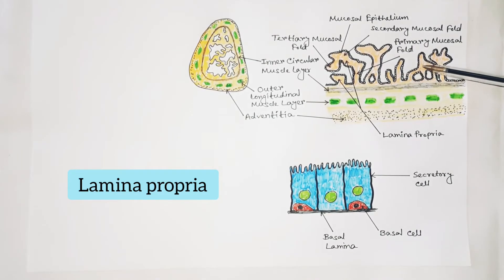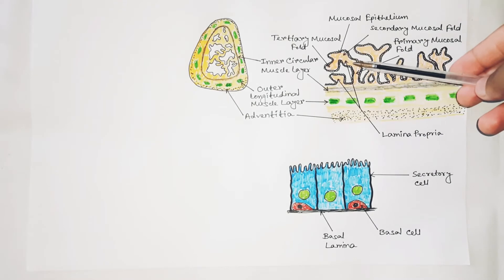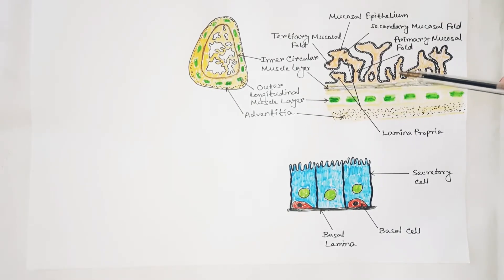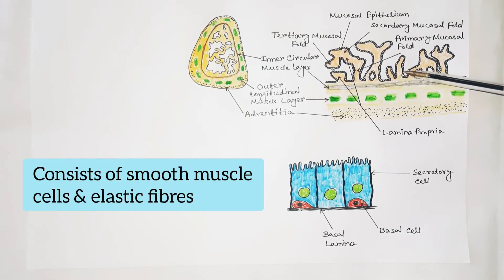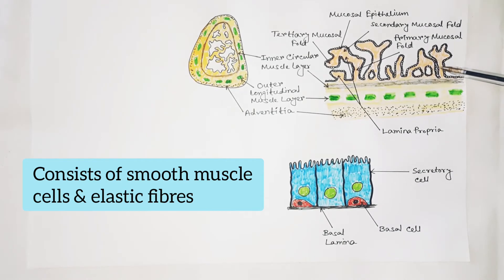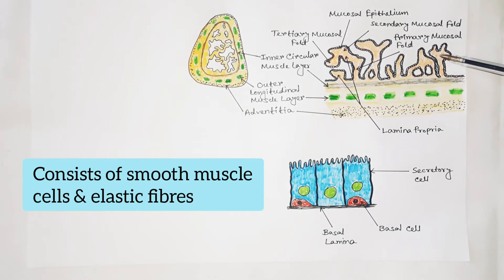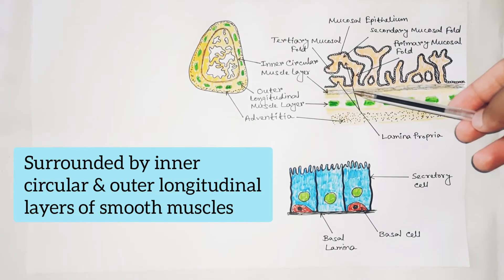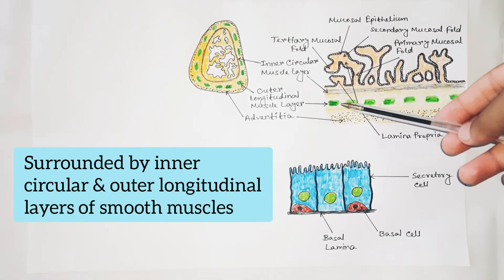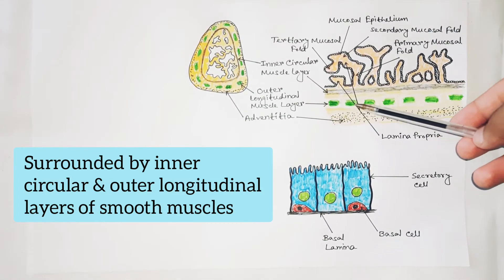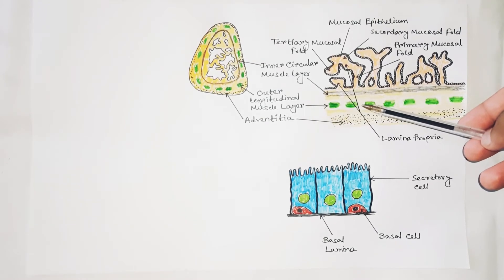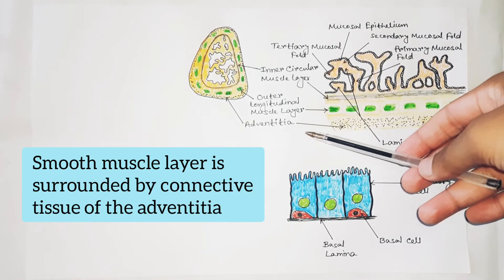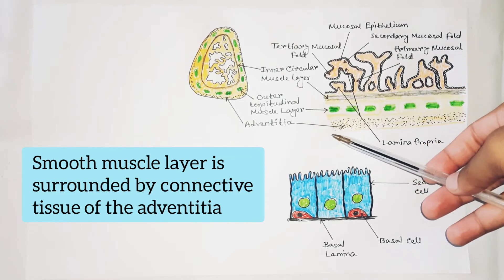The lamina propria is a loose connective tissue layer which extends into the folds. It consists of smooth muscle cells and elastic fibers. The lamina propria is surrounded by inner circular and outer longitudinal layers of smooth muscle, which in turn is surrounded by connective tissue of the adventitia.